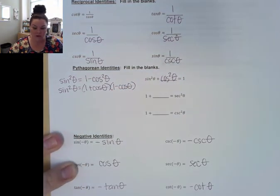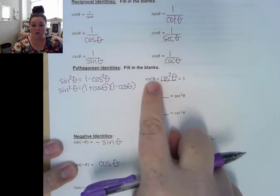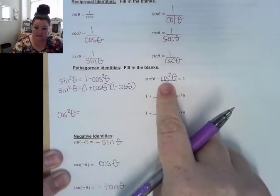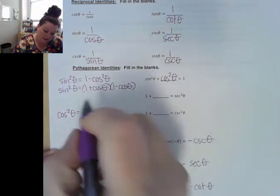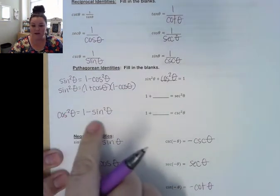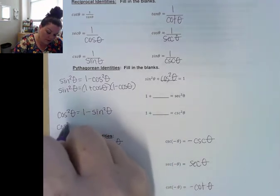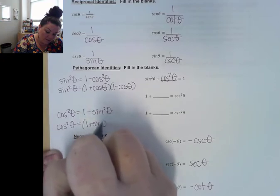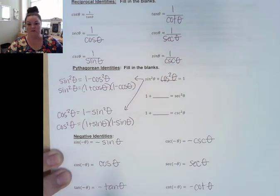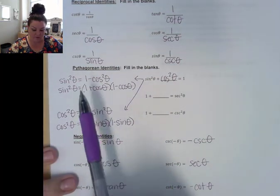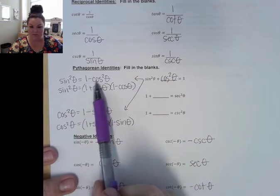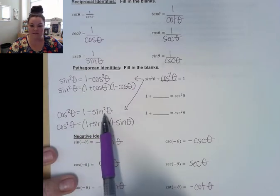Taking the first identity and solving it for cosine squared, we isolate cosine by moving sine squared to the other side, giving cosine squared theta equals 1 minus sine squared theta. This is also a difference of squares, so cosine squared theta equals (1 plus sine theta)(1 minus sine theta). On homework, you may have needed to replace 1 minus cosine squared with sine squared, or 1 minus sine squared with cosine squared.